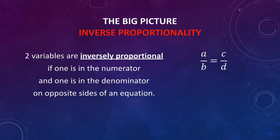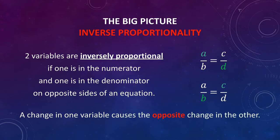On the other hand, we say that two variables are inversely proportional if one is in the numerator and the other is in the denominator on opposite sides of an equation. If they are inversely proportional, a change in one variable causes an opposite change in the other.